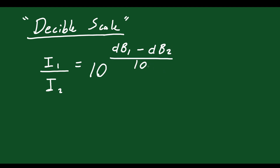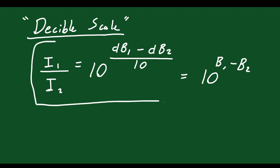We divide by 10 because of the units — decibels. You could say this equals 10 to the exponent b1 minus b2, with b1 and b2 being bells. But we typically measure in decibels rather than bells — similar to using kilometers versus meters. Decibels are most common, so we divide by 10. Otherwise, it's the exact same formula as for earthquakes, because it works on a logarithmic scale.